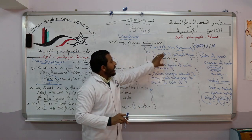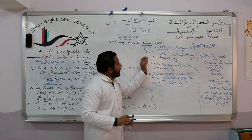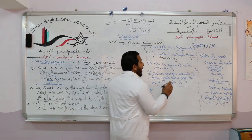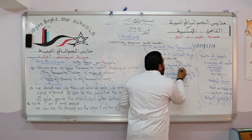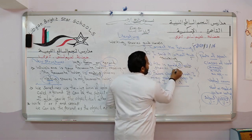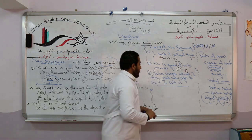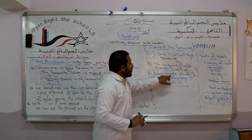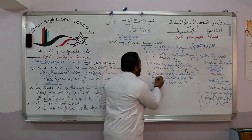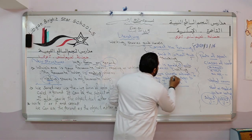I said it without thinking. The second one: Ali is good at write stories. At is a preposition, so we must say writing. Before choose a book — before is a preposition, so we must say choosing.